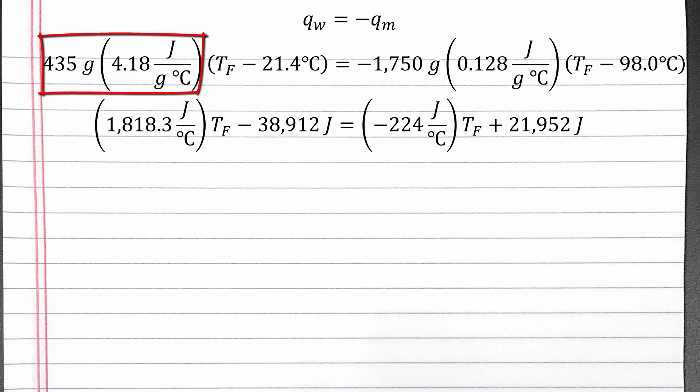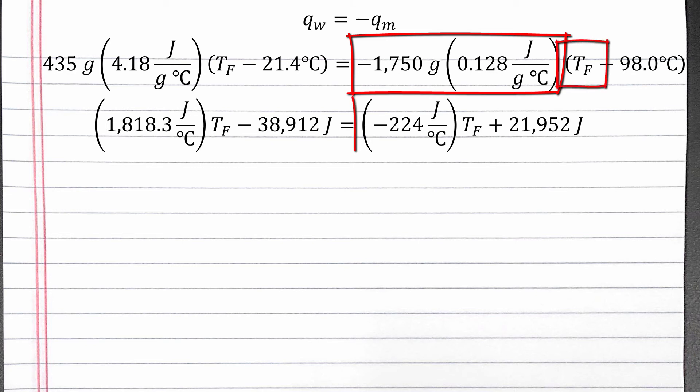On the right, negative 1750 grams times 0.128 joules per gram degrees Celsius times T final is negative 224 joules per degree Celsius times T final.